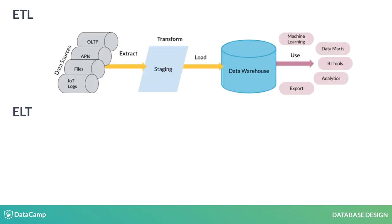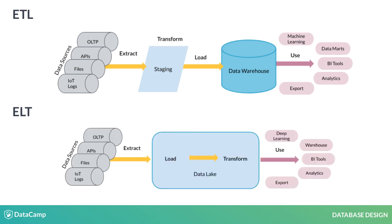In ETL, data is transformed before loading into storage, usually to follow the storage's schema, as is the case with warehouses. In ELT, the data is stored in its native form in a storage solution like a data lake. The portions of data are then transformed for different purposes, from building a data warehouse to doing deep learning.